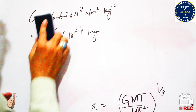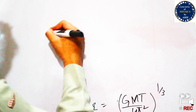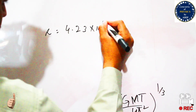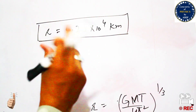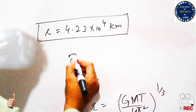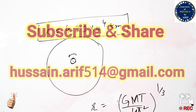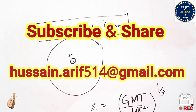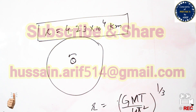Putting all values into the expression, we get R equals 4.23 × 10⁴ kilometers. At this distance, the satellite remains around the Earth — as the Earth rotates about its axis, the satellite revolves around the Earth's center. This distance defines the geostationary orbit. We have now covered geostationary orbits, orbital velocity, and Earth's rotational motion. If you liked the video, please subscribe for more. Bye bye.